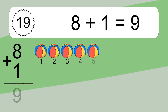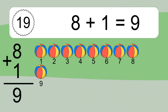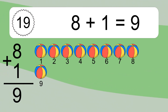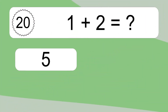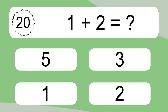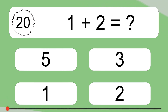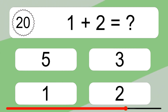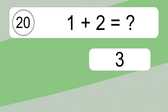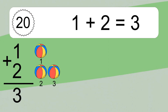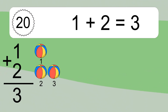Eight plus one equals nine. Let's count it: one, two, three, four, five, six, seven, eight, nine. One plus two equals what? One plus two equals three. Let's count it: one, two, three.